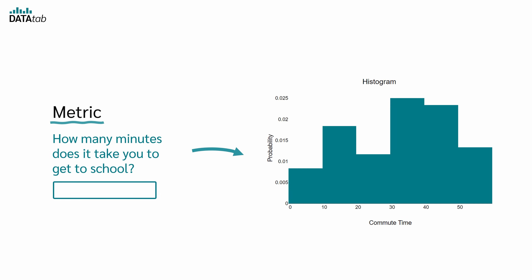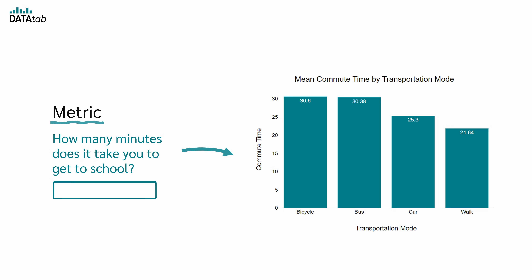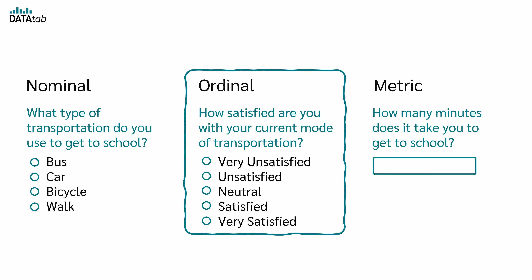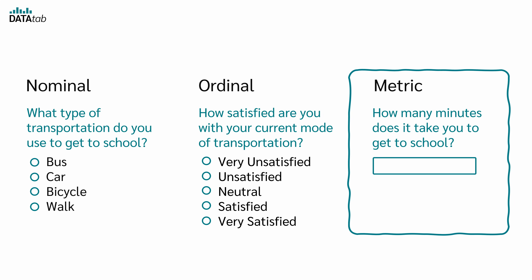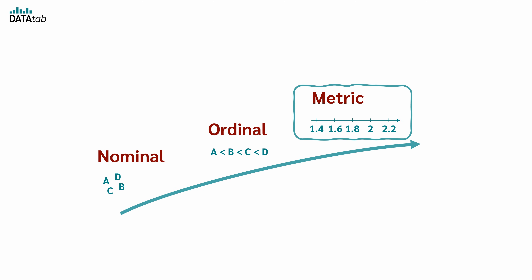We can visualize this data with a histogram showing the distribution of time to get to school and compare the different transportation modes. Using nominal data, we can categorize and count responses but cannot infer any order. Ordinal data allows us to rank responses but not to measure precise differences between ranks. Metric data enables us to measure exact differences between data points. As already mentioned, metric level of measurement can be further subdivided into interval scale and ratio scale.